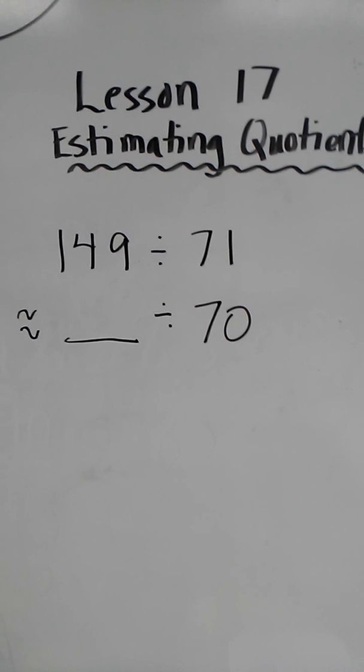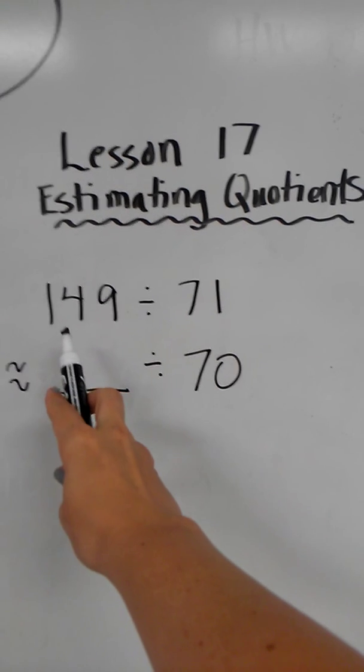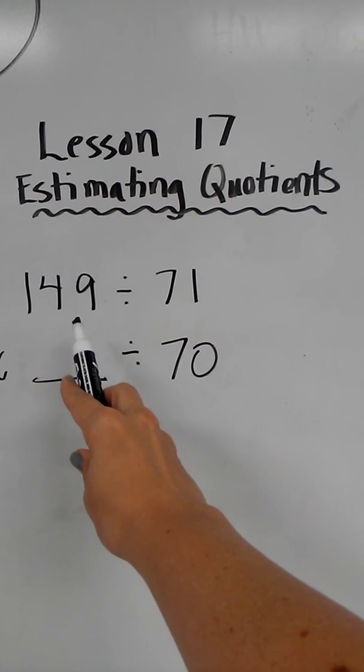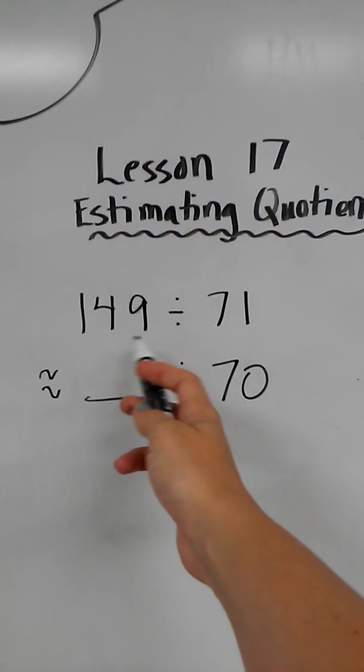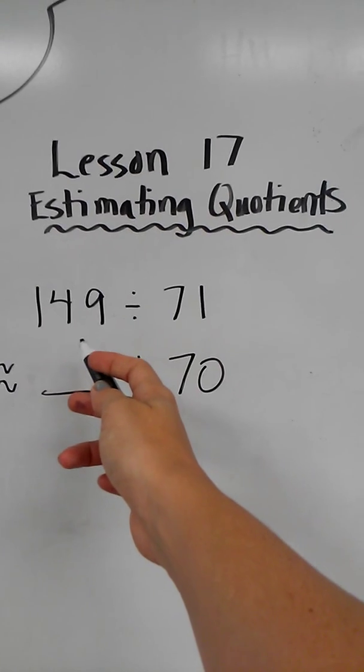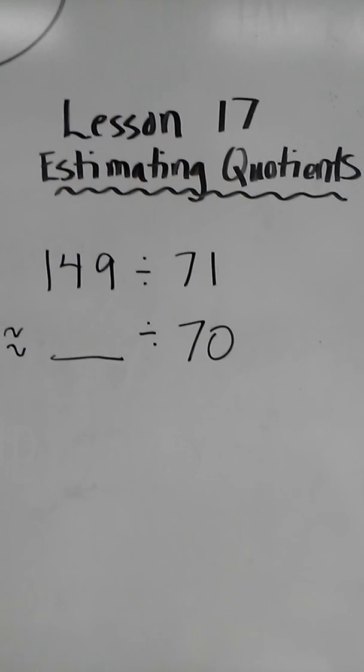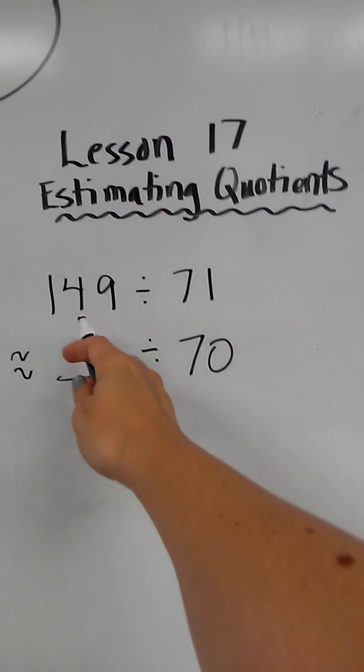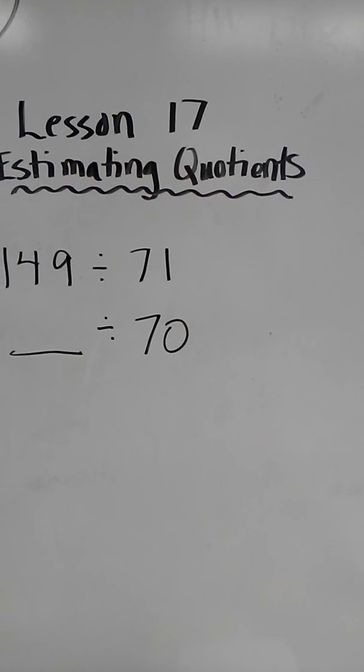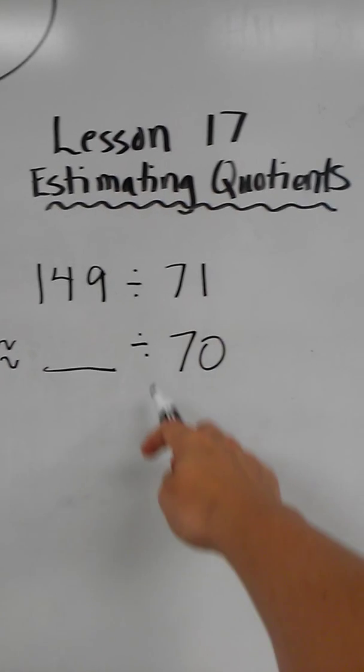Now, when rounding our whole or dividend of 149, usually when we round, we would round to the nearest hundred or the nearest ten. But since we're dividing, it would be really nice if our whole, our dividend, was a multiple of our divisor, 70.